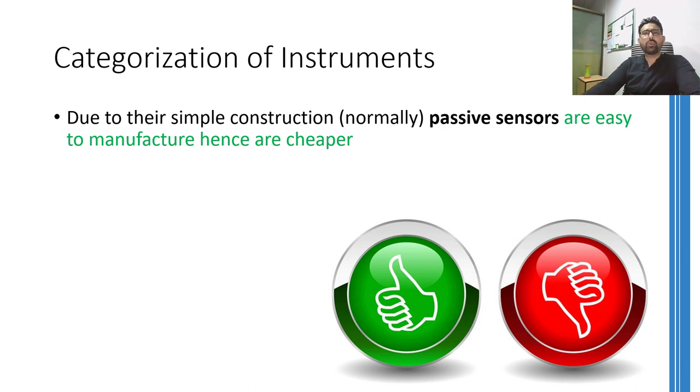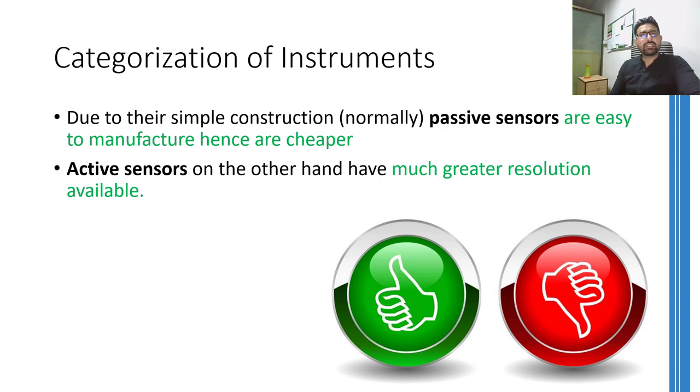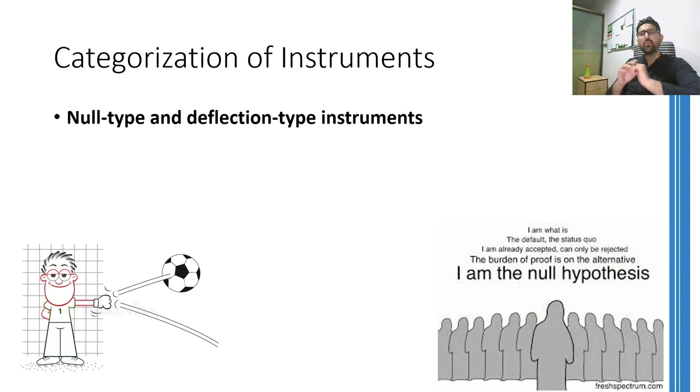As far as the utility of both kind of instruments is concerned, passive instruments are normally simpler in construction and have much lower resolution as compared to active ones. Therefore, they are normally cheaper as well. However, active instruments involve much more complex construction. Normally, the electronics is there which gives these instruments much higher resolution making them quite expensive. Another way in which we can categorize instruments is whether the instrument shows the measured value through some deflection or that measurement is shown by some zero reading or null reading.